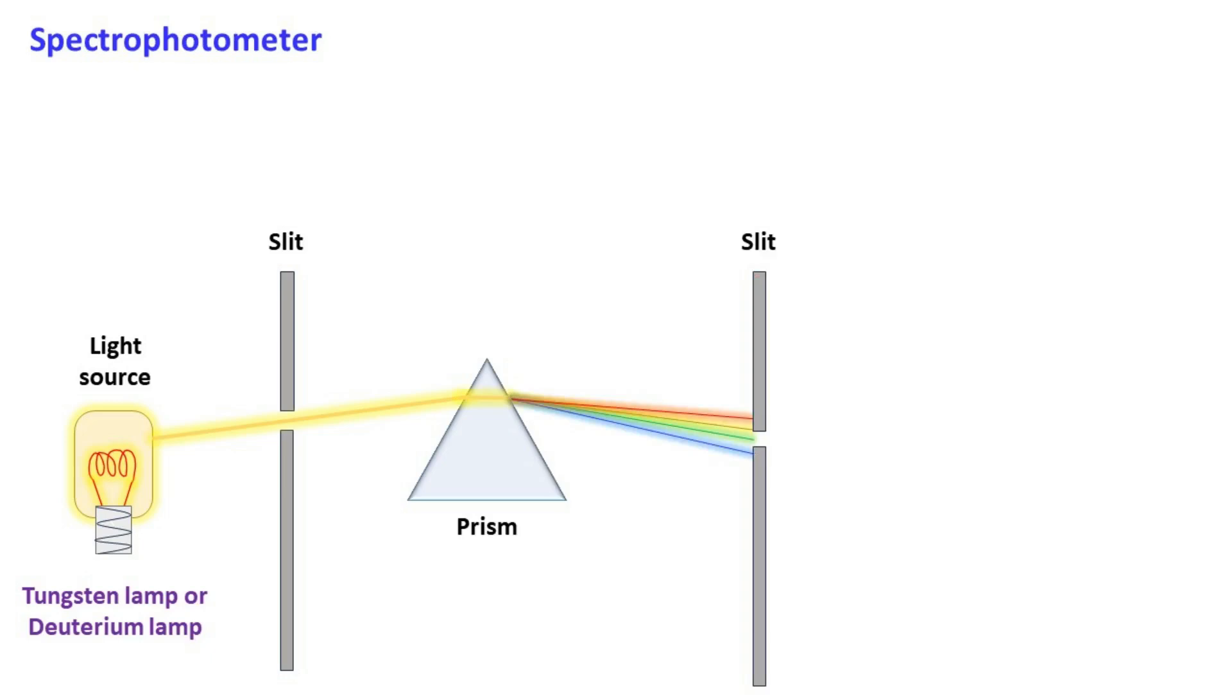Using a slit, a specific wavelength of light is allowed to pass. By changing the angle of the prism, we can select different wavelengths.